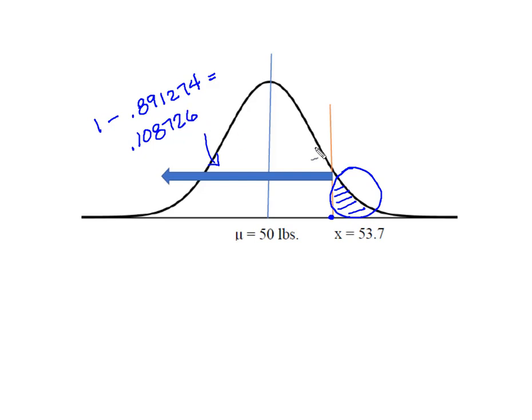And I'm going to round that off. I'm going to say that the probability of randomly selecting a bulldog having a weight more than 53.7 pounds is 10.87%.